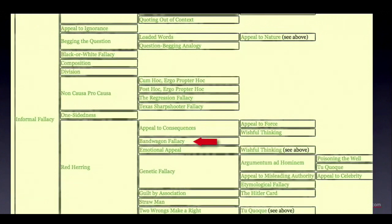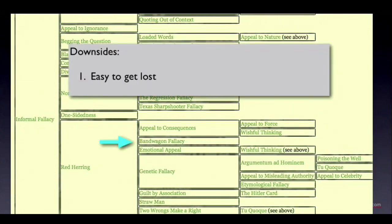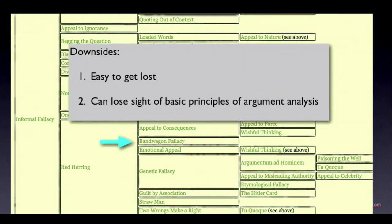There are some downsides, however. First, it's easy to get lost in all of this — there are so many fallacies, it's hard to remember their names, and it's easy to get confused. Second, it's easy to lose sight of the basic principles of argument evaluation if your focus is entirely on memorizing fallacy types. Every fallacy is just a bad argument — bad either because it has weak logic, relies on a false premise, or violates some other basic principle of argumentation. In principle, you should be able to analyze any argument using only a small handful of basic principles, but you can lose sight of these if you start thinking of argument analysis as essentially an exercise in pigeonholing arguments into fallacy types.